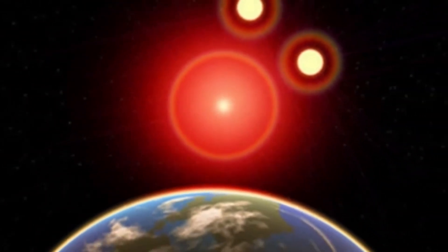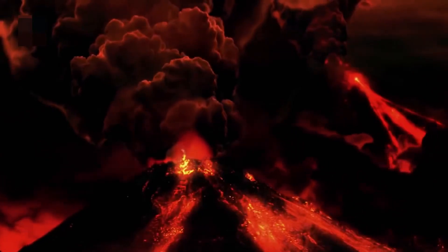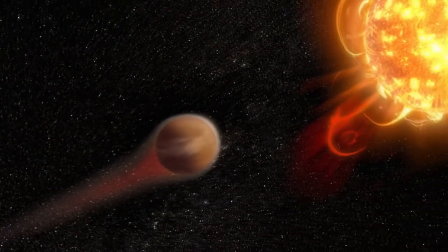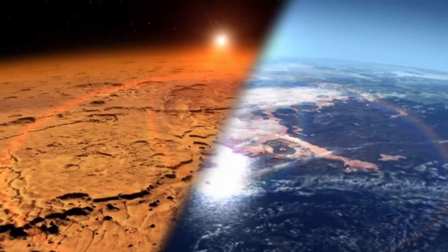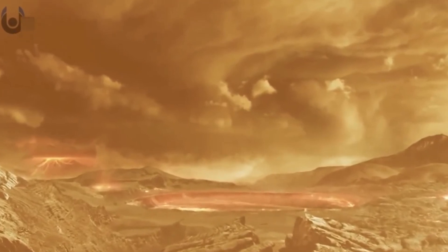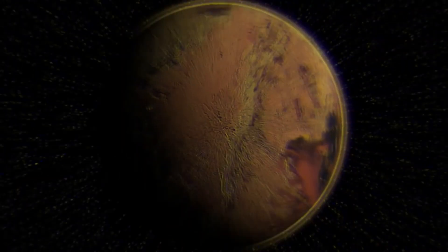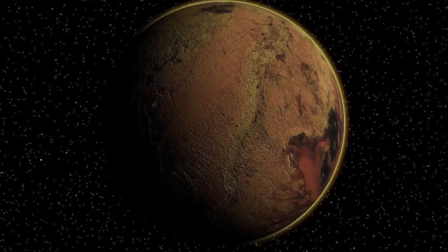If both of the new candidates were to be confirmed, that would mean Proxima Centauri would have at least three planets orbiting it. One potential problem though is that red dwarf stars are very energetic and emit dangerous radiation that could strip the atmospheres off of planets that are too close. Whether this is the case for Proxima Centauri b is not known yet.